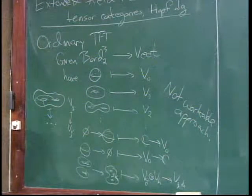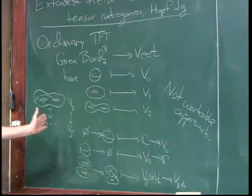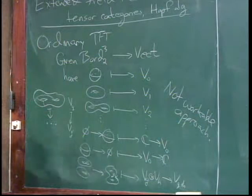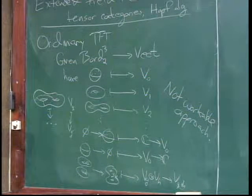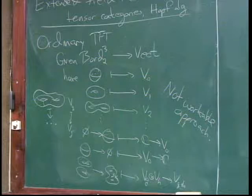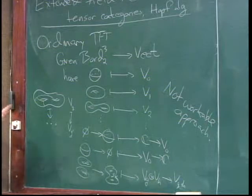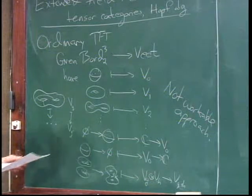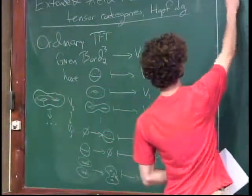The next idea is that we worked pretty well when we started with circles in the two-dimensional case, because all the structure was living on one vector space. So could we start with circles here as well? And that leads us to the notion of extended TFTs.